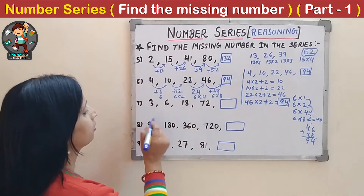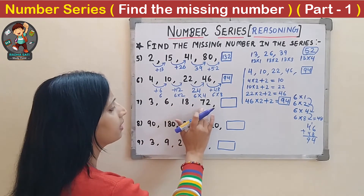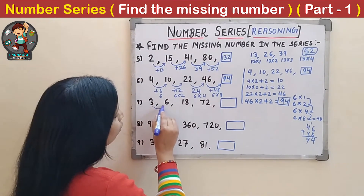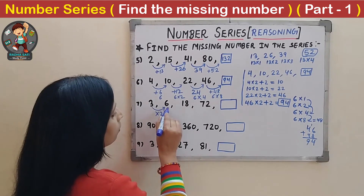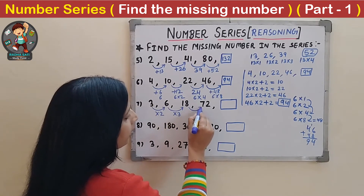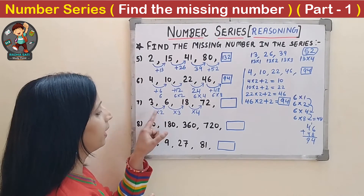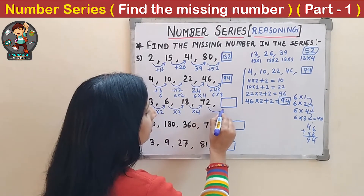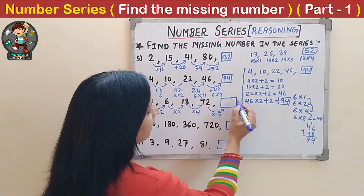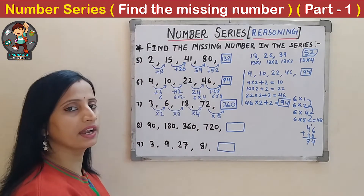Seventh question: 3, 6, 18, 72, _. Numbers are increasing by multiple times, so multiplication is going on. 3×2 = 6, 6×3 = 18, 18×4 = 72. The pattern is multiply by 2, 3, 4, so next is multiply by 5. 72×5 = 360. The missing number is 360.